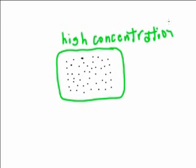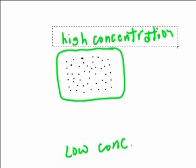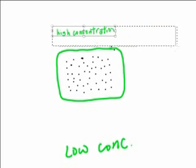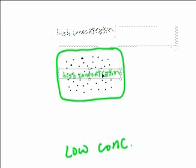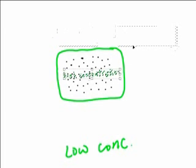So in the rectangle there, we have a high concentration of particles. Outside the rectangle, we have a very low concentration of particles. We're going to put the high concentration of particles inside the rectangle. There's a high concentration of particles inside the rectangle and a low concentration of particles outside the rectangle.